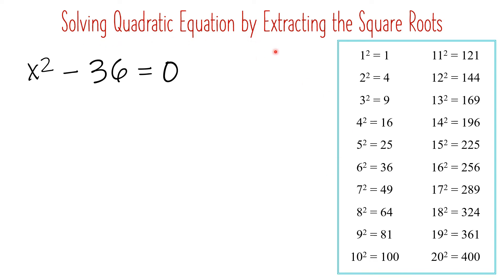Solving Quadratic Equations by Extracting the Square Roots. To use this method, you must have knowledge of perfect square numbers. I have listed here perfect square numbers from 1 to 20. If you extract the square root of a perfect square number — for example, the square root of 25 — the answer will be 5, because 25 is from 5 times 5. That's what we're going to do in extracting the square roots in this quadratic equation.